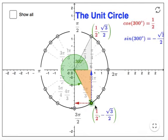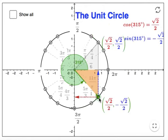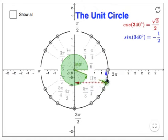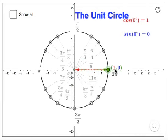At 300 degrees it's related to the 30-60 triangle. Here we have 315 degrees, related to the 45 triangle. And this is our 30-60 triangle again. As we go back to 0 degrees, the positioning is going to be 1, 0 on the radius-1 circle.